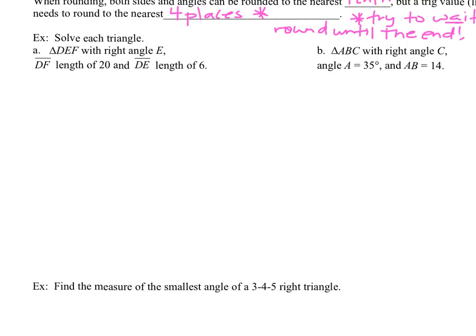Here are all these rules — let's see how to apply them in a given problem. Our example is to solve each triangle. For example A, it says triangle DEF with right angle E. Let's draw that picture first. I'm going to create a right triangle and identify my right angle in the corner using that angle symbol. That angle has to be the letter E. For the rest of the triangle, D and F can be in either location — either at the top or the bottom right.